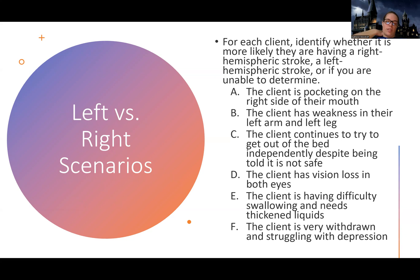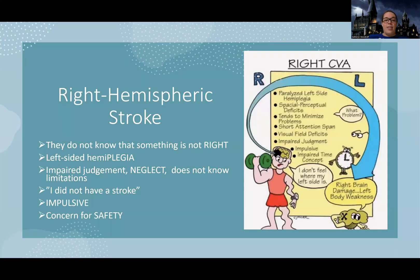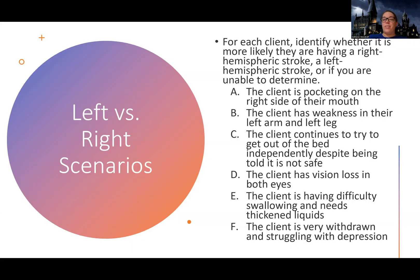Scenario D: the client has vision loss in both eyes. Vision loss can actually happen with either type of stroke — it's not more likely one versus the other. It really just depends on which part of the brain is affected. So the answer for D is unable to determine. Scenario E: the client is having difficulty swallowing and needs thickened liquids. Again, unable to determine — that's a symptom a patient can have but it doesn't tell us which side of their brain or body is specifically affected. This could be either, so unable to determine.